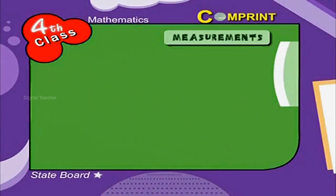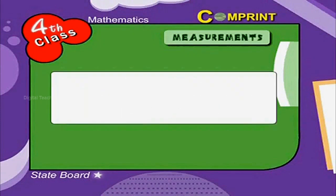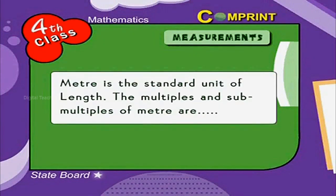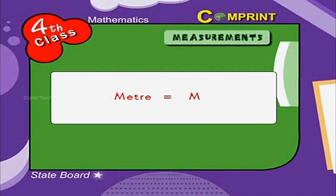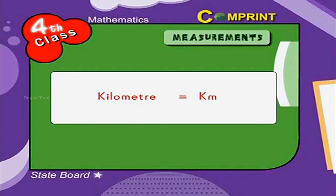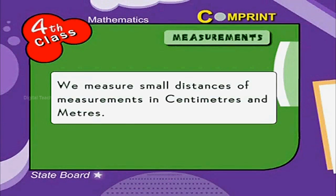Measurement of Length. Meter is the standard unit of length. The multiples and submultiples of meter are centimeter and kilometer. The short form of meter is m, the short form of centimeter is cm, and the short form of kilometer is km. We measure small distances or measurements in centimeters and meters.